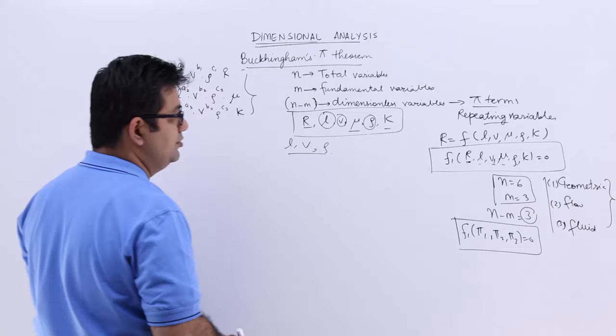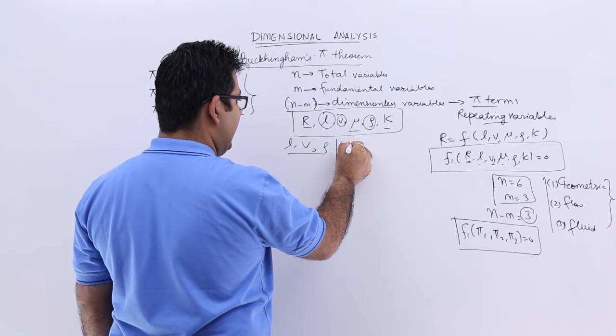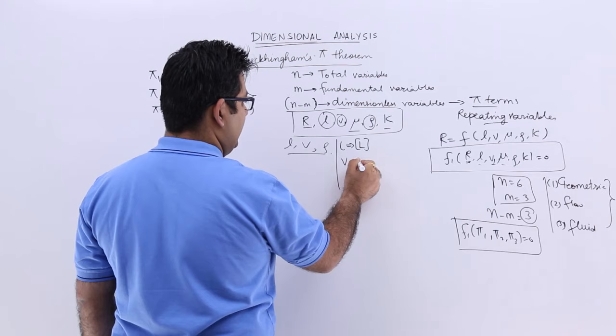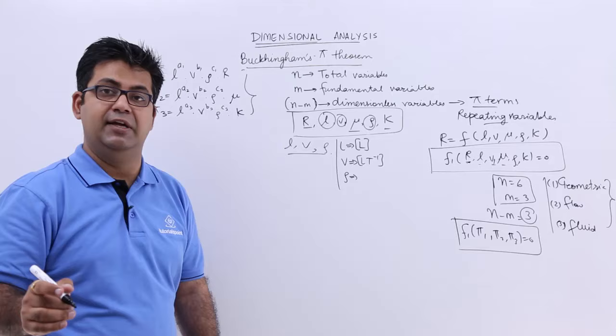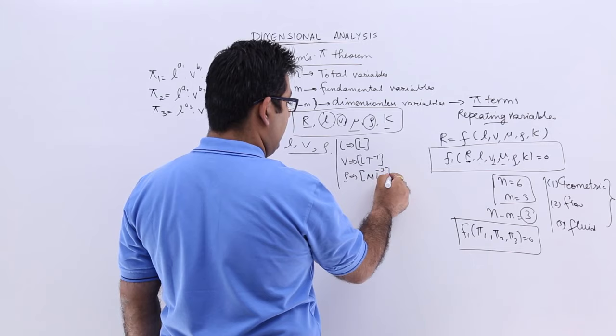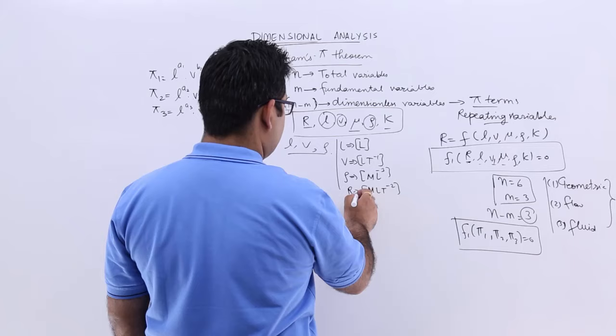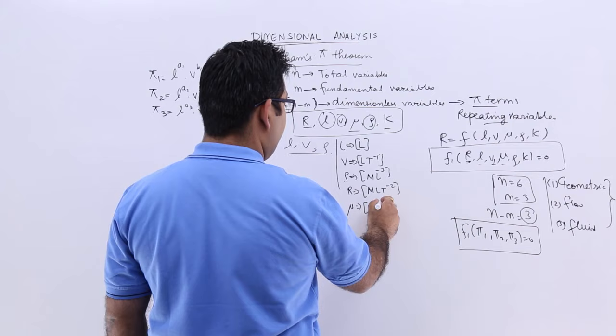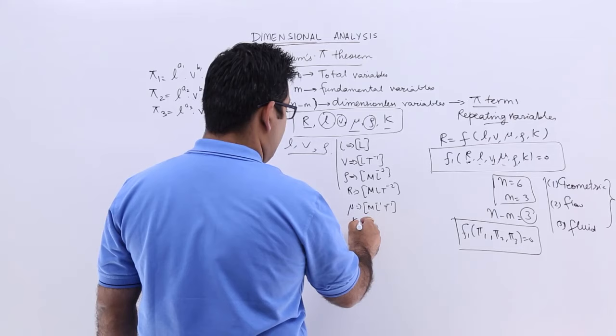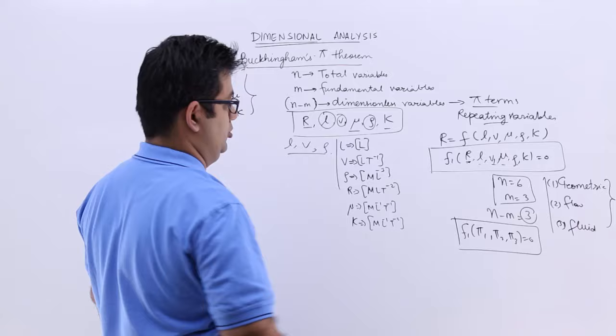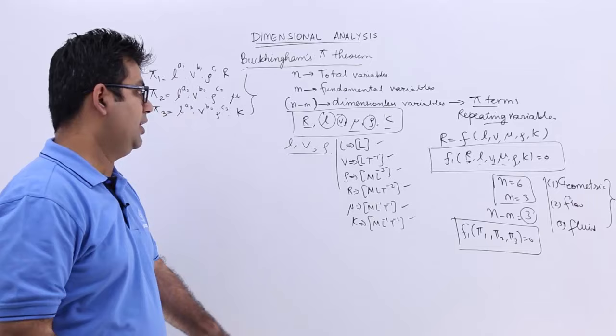When you find these 3 pi terms, the function f1 can be written as f of pi1, pi2, and pi3 equal to 0. The dimensions of L, V, and rho are known. The dimension of L is L; velocity is L T to the minus 1; density is M L to the power minus 3. The dimension of R (force) is M L T to the power minus 2. The dimension of mu is M L minus 1 T minus 1. The dimension of K or bulk modulus is M L minus 1 T minus 2.